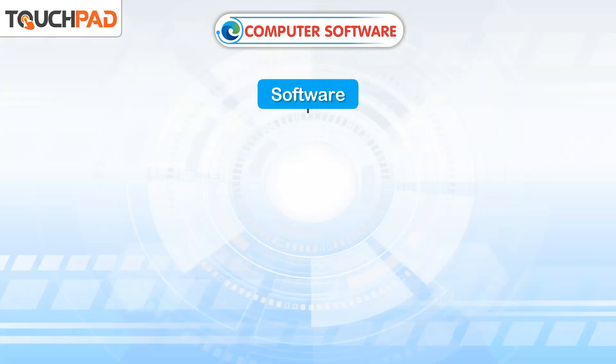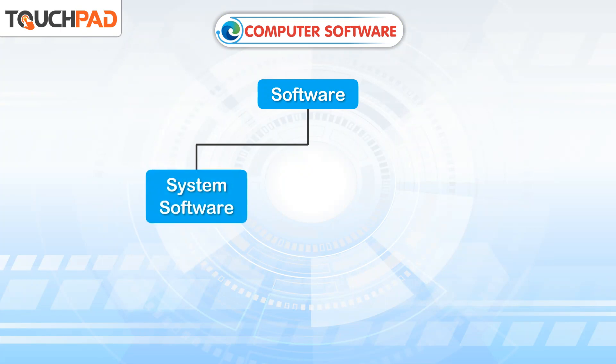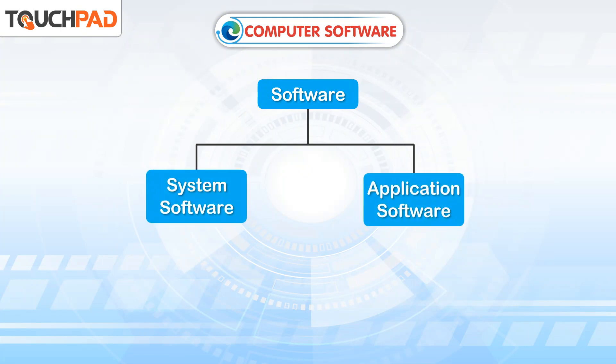There are two types of software: system software and application software.